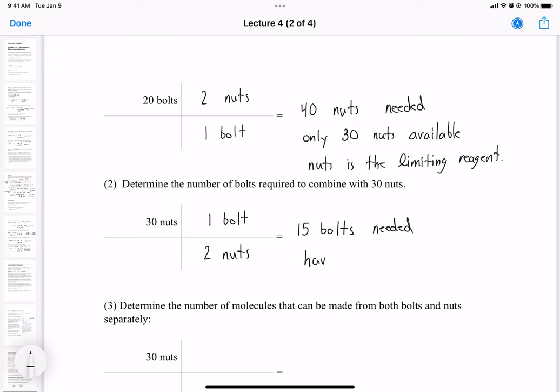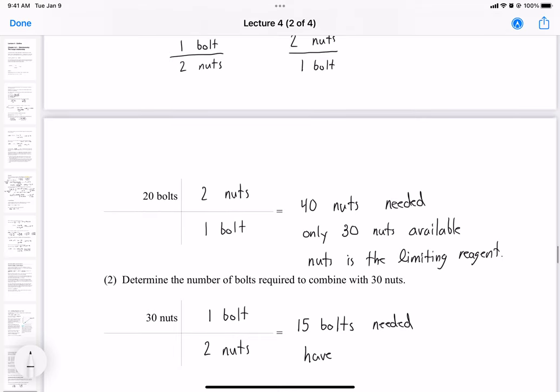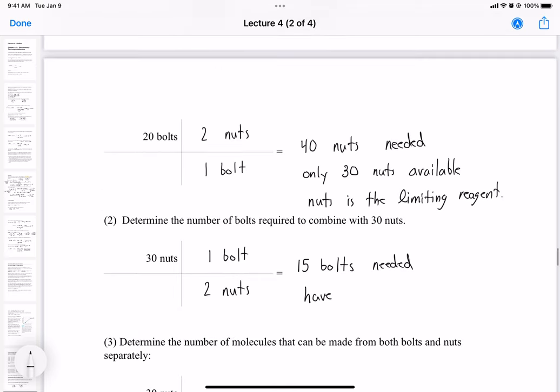But we have 20 bolts though. So if we go back to our previous example, we have 20 bolts. And we know that this means we have an excess of bolts, right? So we have an excess of bolts. So 20 bolts excess. So we have an excess of bolts.